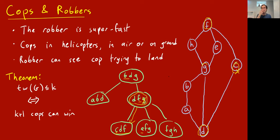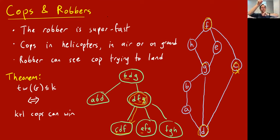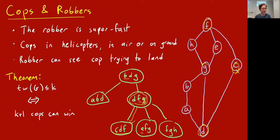That's a fun way to understand tree width. You can also think about why two cops can always win in a tree, which has tree width one: you land a cop in the tree, the robber goes into one of the two subtrees hanging off where the cop is, and then the second cop moves one edge in the direction of the robber. The cops keep moving down edges and catch the robber.